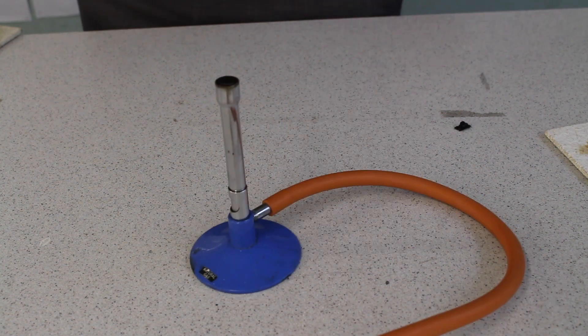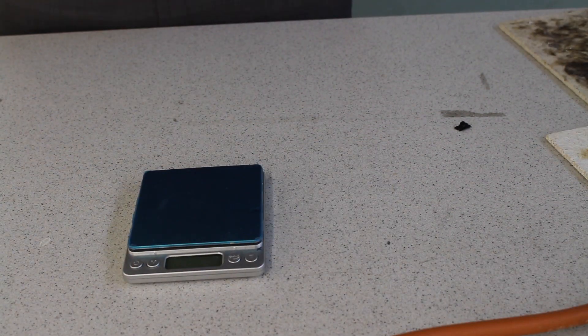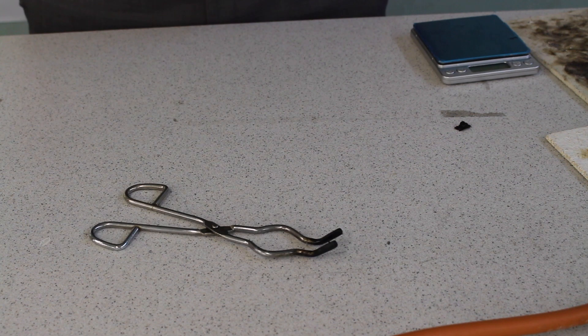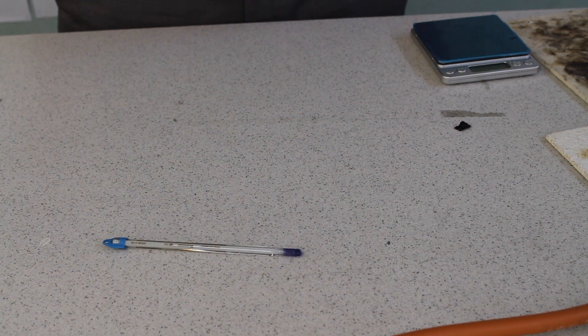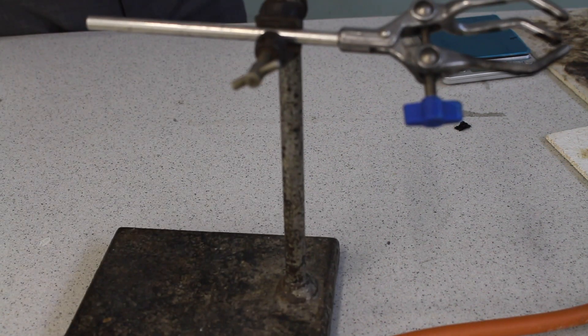Equipment that you're going to need for this experiment: Bunsen burner, heatproof mat, a balance, a boiling tube, tongs, a thermometer, water, a measuring cylinder capable of measuring up to 20 centimeters cubed or above, and a clamp stand.